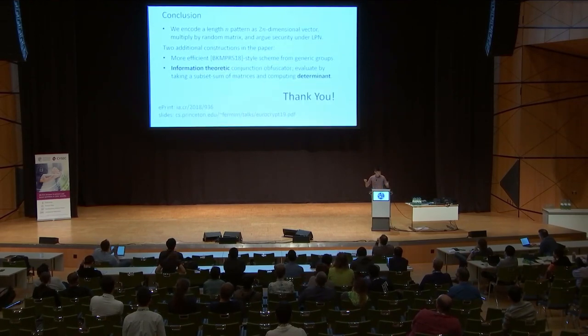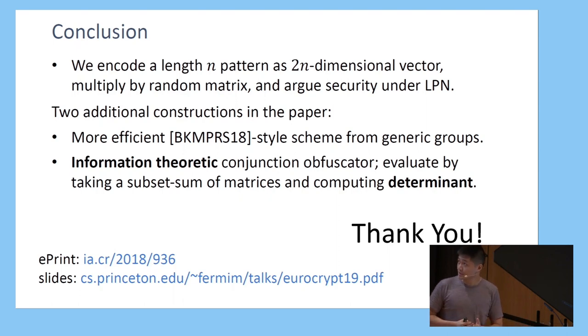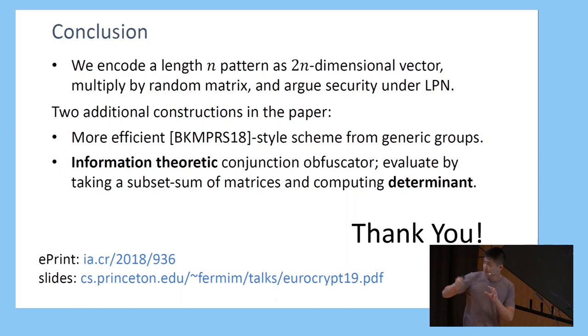To conclude: we obfuscate by taking a pattern, writing it as this 2n-dimensional vector, and literally just multiplying by a random matrix. Security follows under standard constant-rate LPN. We have two additional constructions in the paper: a generic group scheme very similar to BKMPRS, and an information-theoretic construction where evaluation is done by taking a subset sum of matrices corresponding to your input and computing the determinant of that matrix. The ePrint link is here and the slides are on my website.